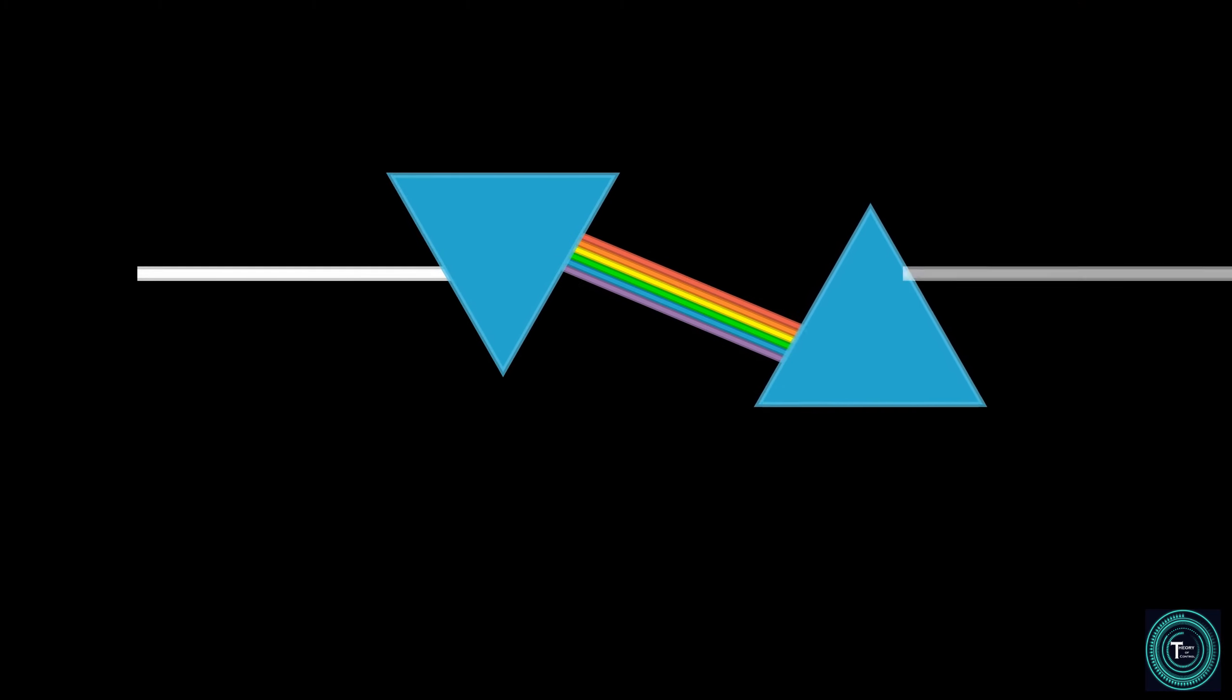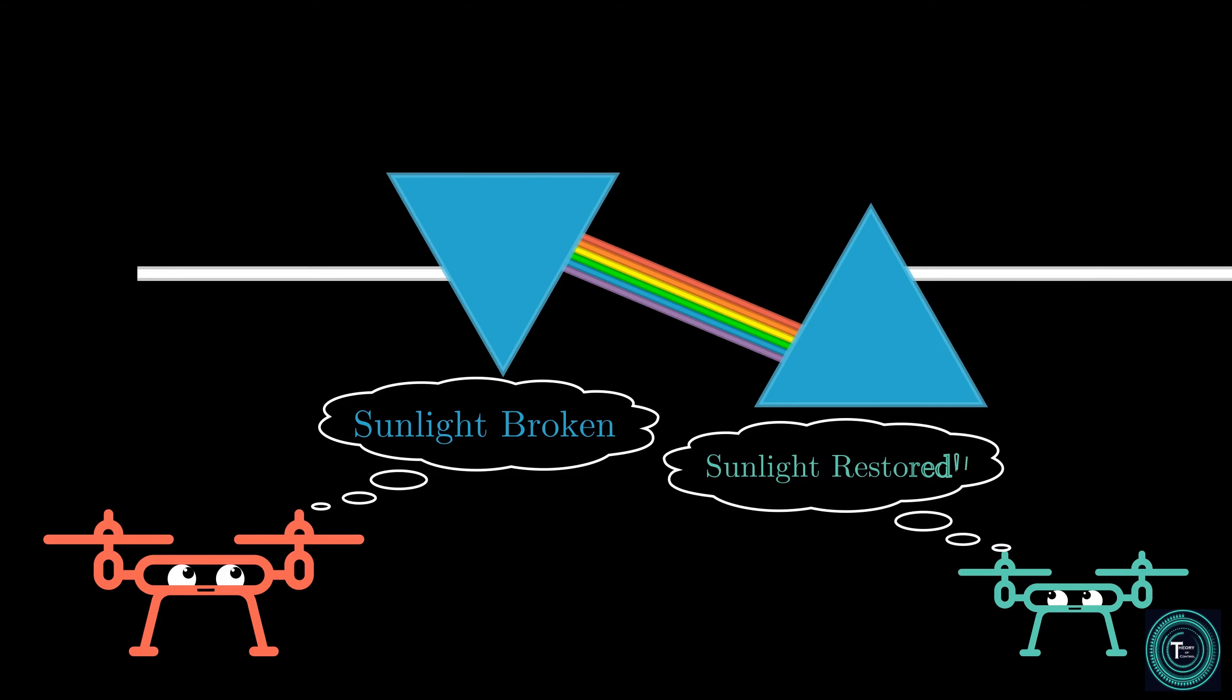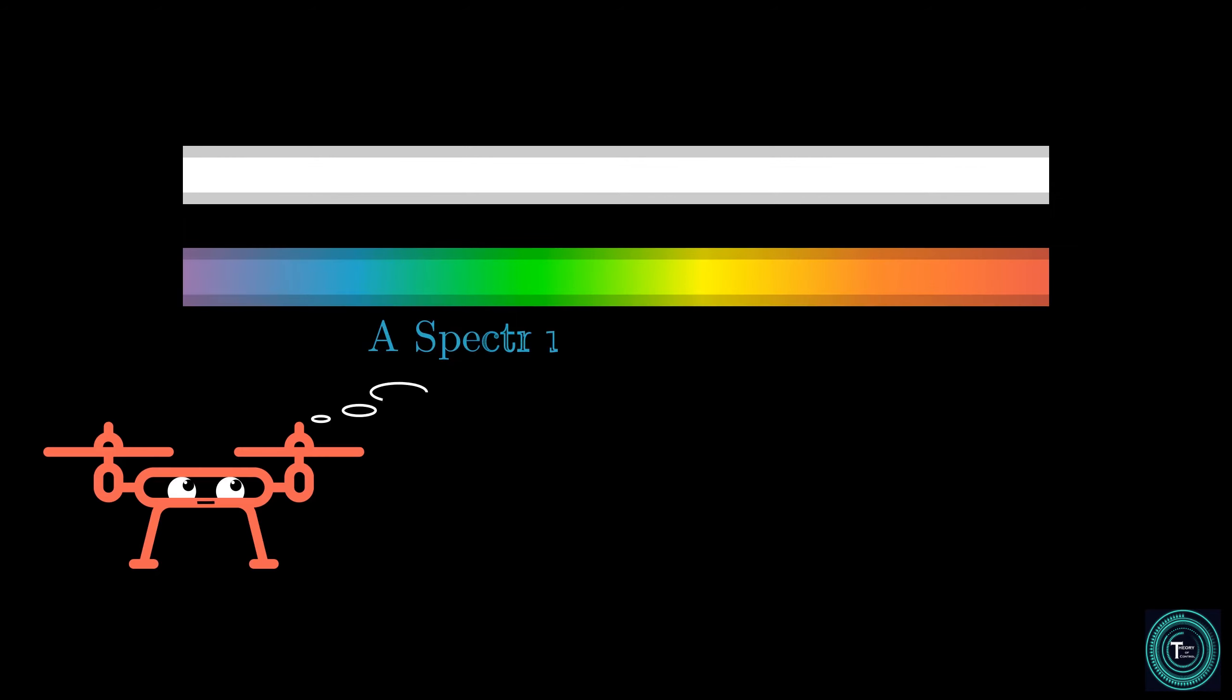Newton then placed another prism but flipped upside down, observing how the seven colours merged back again and the full white light was constructed back at the end of the flipped prism. He made the conclusion that a light passing through the first prism was decomposed into its fundamental components and that the seven rainbow colours are the building blocks of all visible lights.